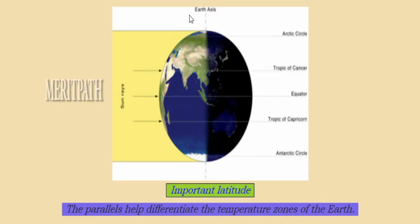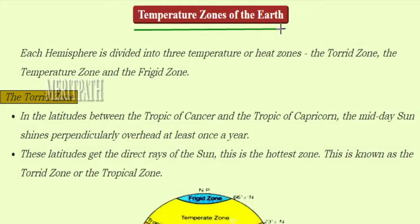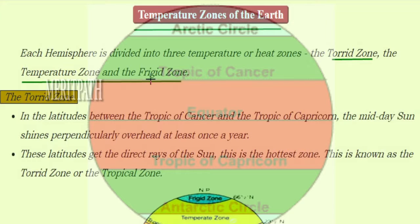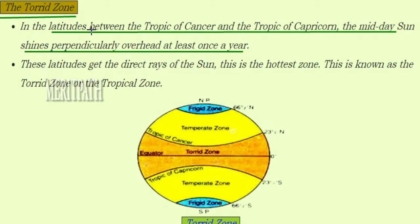These parallels help differentiate the temperature zones of the earth. Each hemisphere is divided into three temperature zones: the Torrid Zone, the Temperate Zone, and the Frigid Zone. The first zone is the Torrid Zone — between the Tropic of Cancer and the Tropic of Capricorn, the midday sun shines perpendicularly overhead at least once a year. These latitudes receive direct rays of the sun and form the hottest zone, also known as the Tropical Zone.